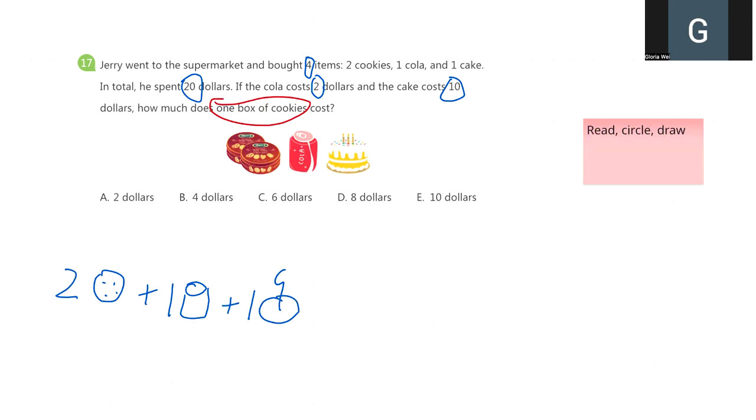And the total is 20. The question already told us one Coke cost $2, so we bring 2 to our equation, and the cake is 10.